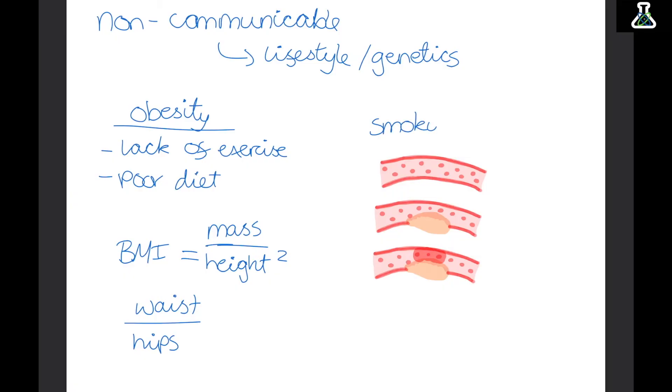Now another lifestyle choice is smoking. Now the top picture is an artery of a non-smoker. So the blood can flow really easily through the artery. Now in a smoker, there's a fatty buildup through the arteries. Now this is really bad because it restricts the blood flow. The blood can't just flow straight through. It has to squeeze around the fat.